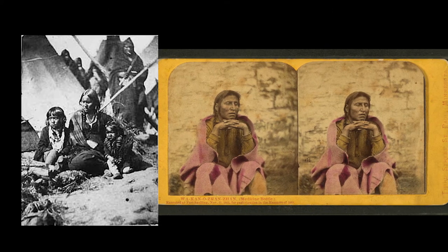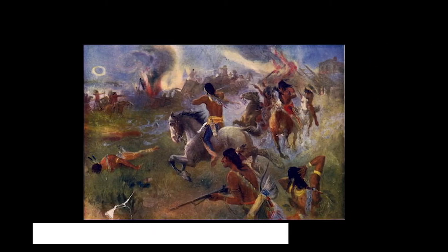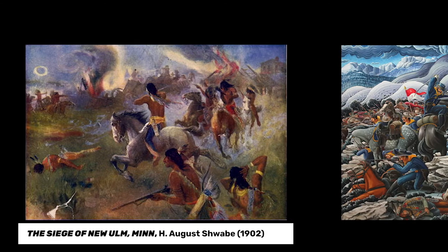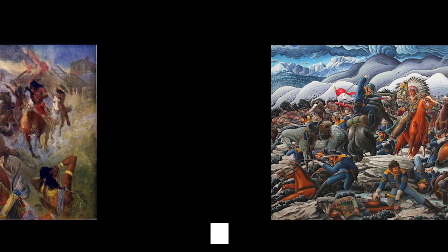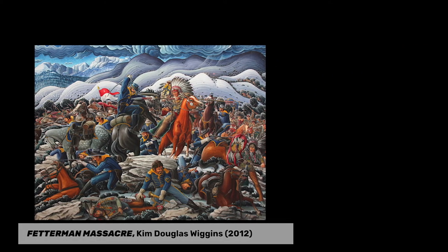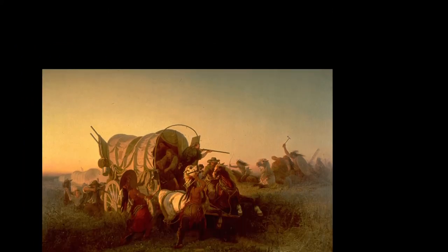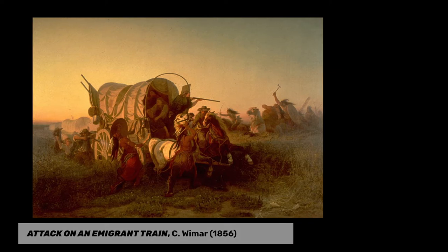To add insult to injury, the government didn't even hold up their end of the treaty. Mismanagement of Sioux annuities was so egregious that the Sioux were suffering from starvation by 1862. In a series of sometimes bloody campaigns against settlers and U.S. troops who were violating the Fort Laramie Treaty, Sioux soldiers looked to defend the land they saw as not only theirs but also incredibly sacred. As news spread of Indian campaigns against whites, paintings at the time increasingly portrayed Indians as ruthless savages who would stop at nothing to kill.